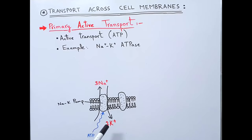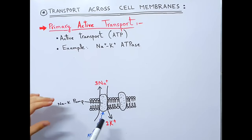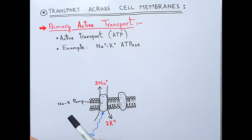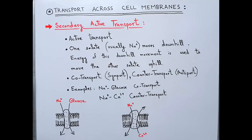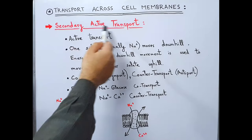In primary active transport, solutes are moved against the concentration gradient — from lower concentration towards higher concentration — by using ATP energy. If you have to move a solute against the concentration gradient, you need energy, and here that energy is derived from ATP. Primary active transport occurs through pumps in the cell membrane that derive energy from ATP and move solutes against their concentration gradient.